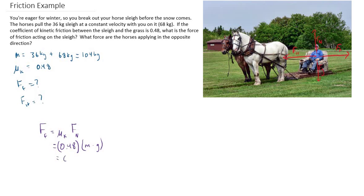So to clarify, this would be 0.48 as our coefficient of kinetic friction. The mass of the person and the sleigh is 104 kg, and the acceleration due to gravity is 9.81 m per second squared.